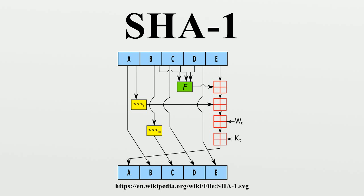SHA-1 and SHA-2 are the secure hash algorithms required by law for use in certain U.S. applications. FIPS Pub 180-1 also encouraged adoption and use of SHA-1 by private and commercial organizations. SHA-1 is being retired from most government uses. Federal agencies should stop using SHA-1 for applications that require collision resistance as soon as practical, and must use the SHA-2 family of hash functions after 2010. Data integrity revision control systems such as Git and Mercurial use SHA-1 not for security, but for ensuring that the data has not changed due to accidental corruption.